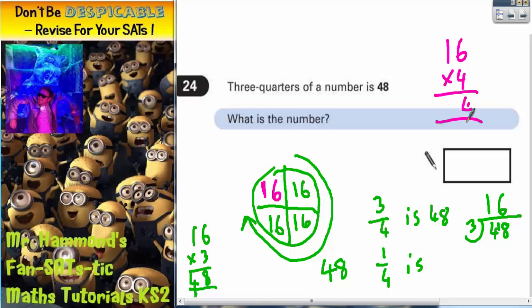Four sixes, 24. Four ones are four, plus that two is six. So the total number is 64.